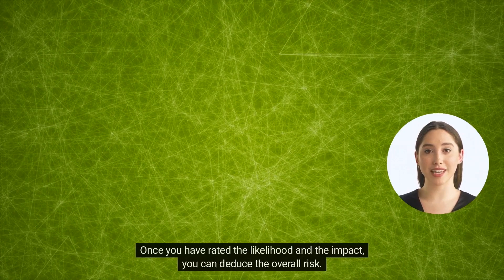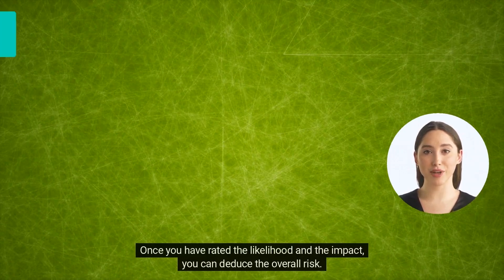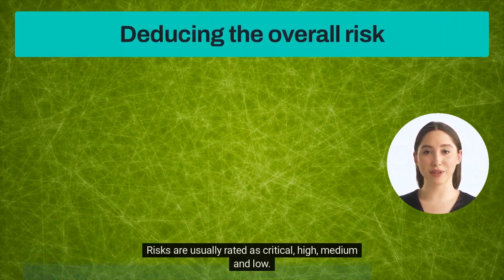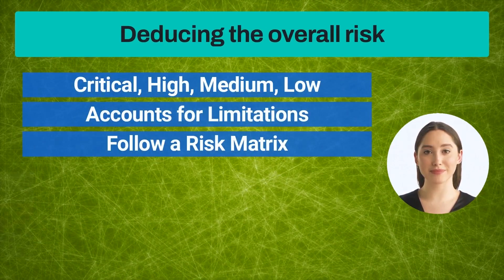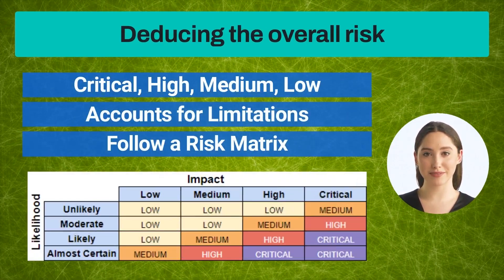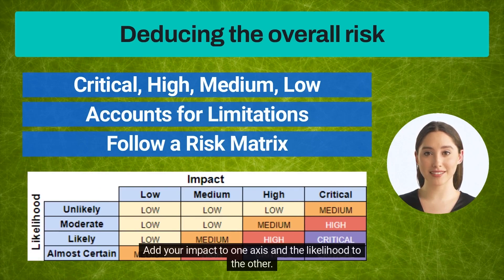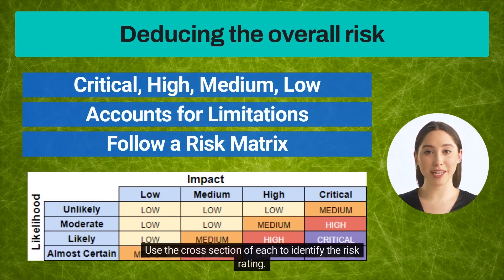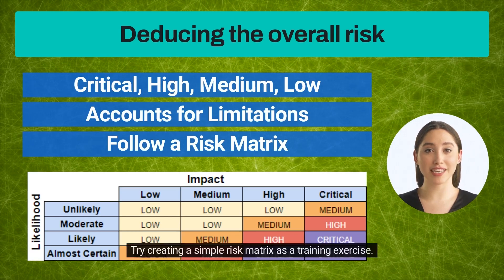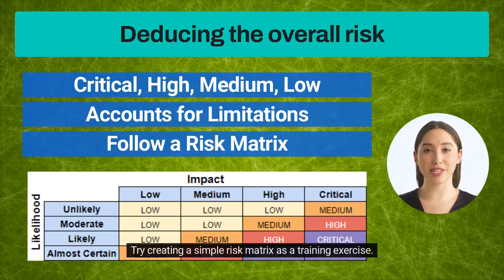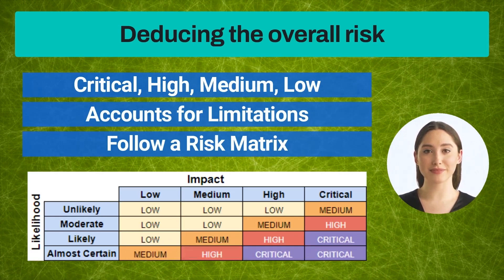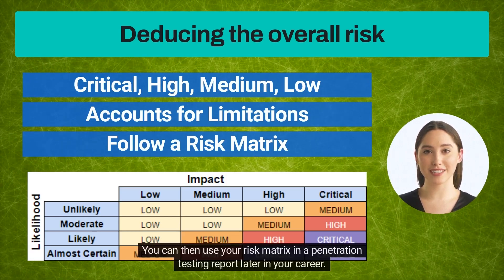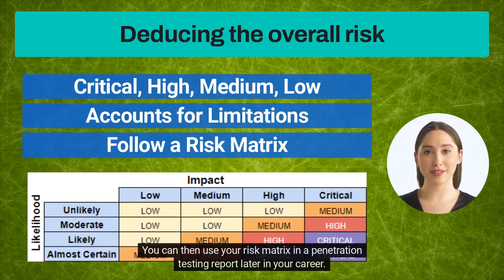Once you have rated the likelihood and the impact, you can deduce the overall risk. Risks are usually rated as critical, high, medium, and low. You'll want to follow a risk matrix — add your impact to one axis and the likelihood to the other, and use the cross section of each to identify the risk rating. Try creating a simple risk matrix as a training exercise in a spreadsheet. You can then use your risk matrix in a penetration testing report later in your career.